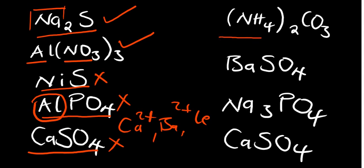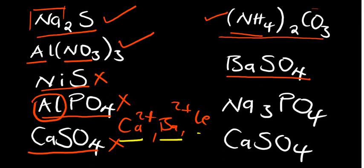We have ammonium carbonate. Do we expect ammonium carbonate to be soluble or insoluble? We have ammonia, and we also have a carbonate. We said all ammonium salts are going to be soluble. So this is soluble. Then barium sulfate: we said all sulfates are soluble with exceptions — calcium, barium, and lead. So barium is part of the exceptions, meaning barium sulfate is going to be insoluble.